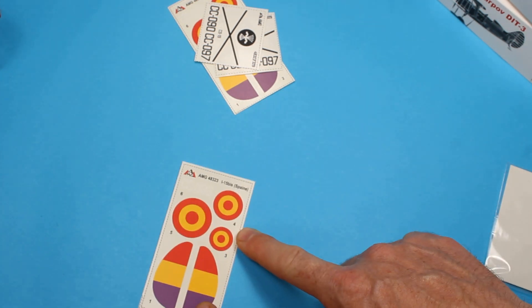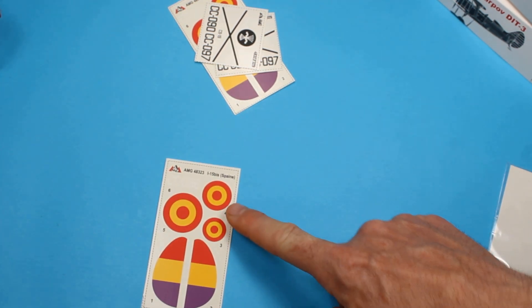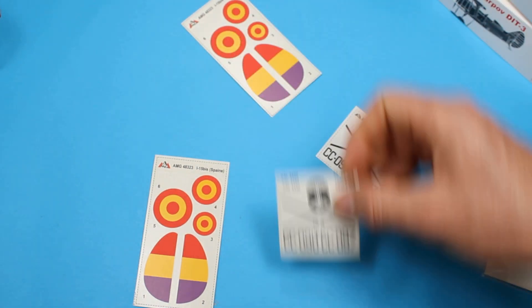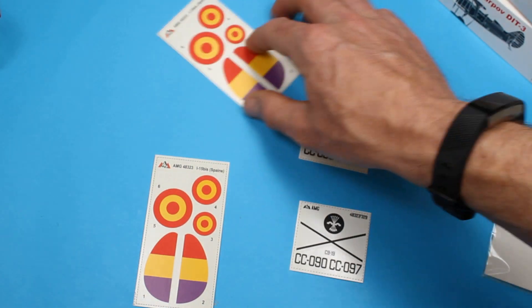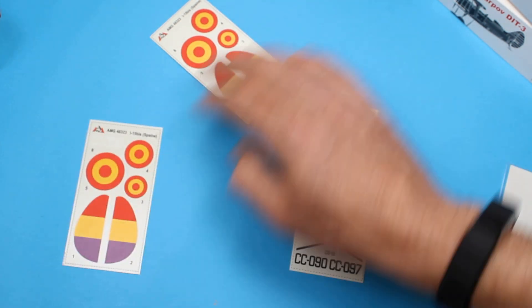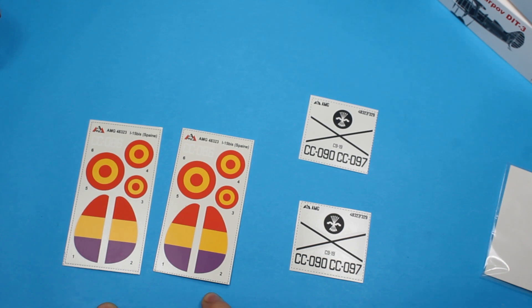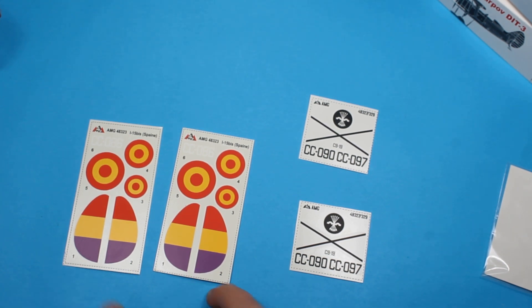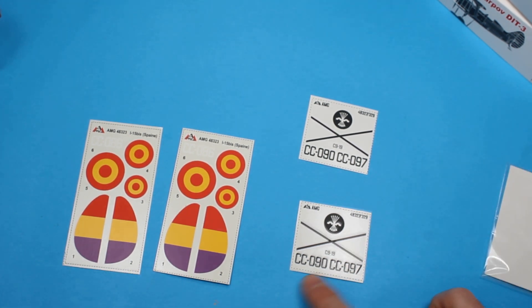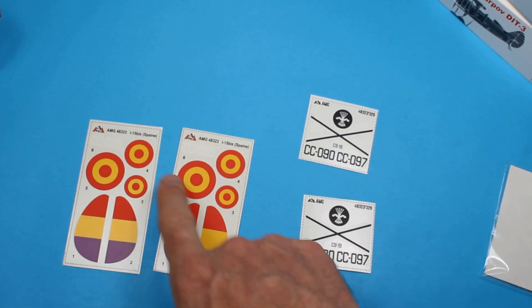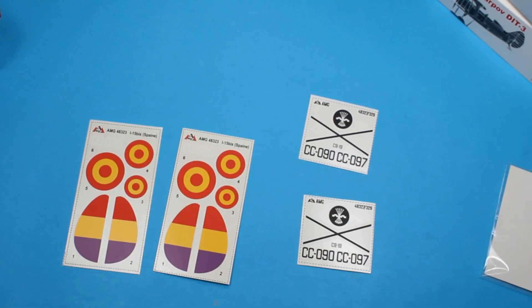We've got a whole bundle of decals here which give you all the options that you could possibly want and you should be able to make something that existed out of this. We've got the actual Spanish Air Force roundels there. So if you want to do a post-war one, I think some came back post-war from France. On here we've got CC086 and this is literally the same sheet twice, and so is this. You've got CC090 and CC097 there in the black and CC086 in the white.